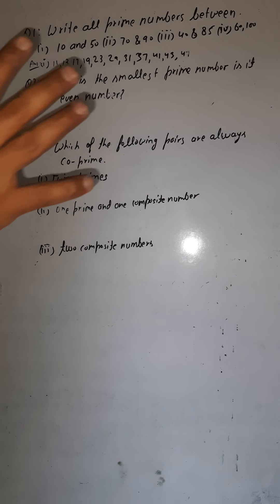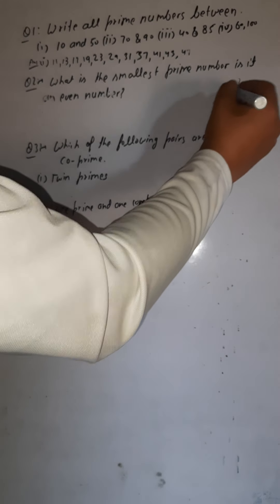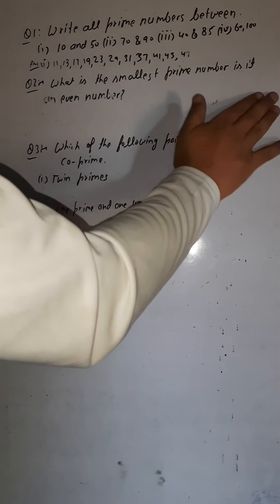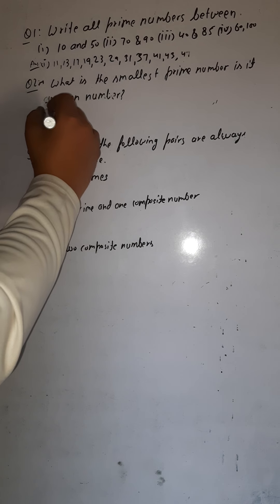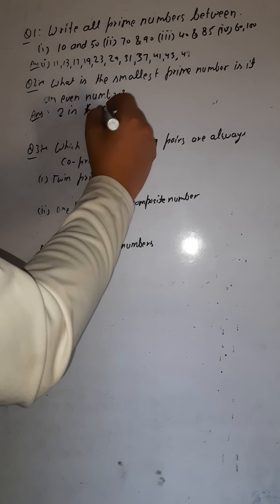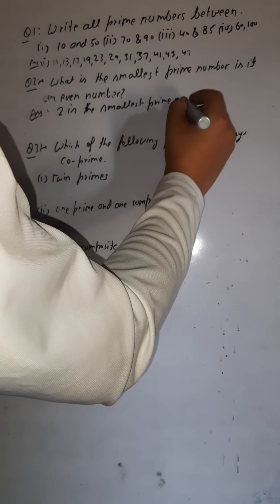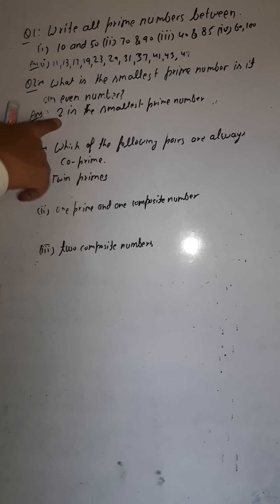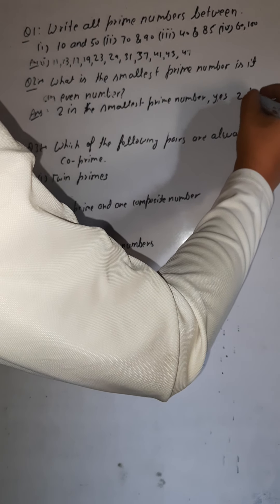So what would be the smallest prime number? One is not — it has only one factor. Two: the factors of two are one and two, so two is divisible by one as well as by two. So two is the smallest prime number. The answer is two. Now, is two an even number? Yes, two is an even number.